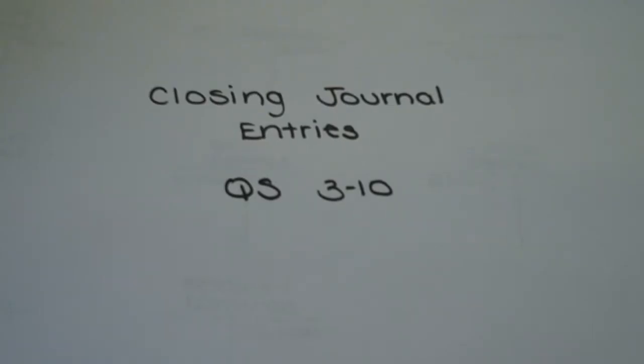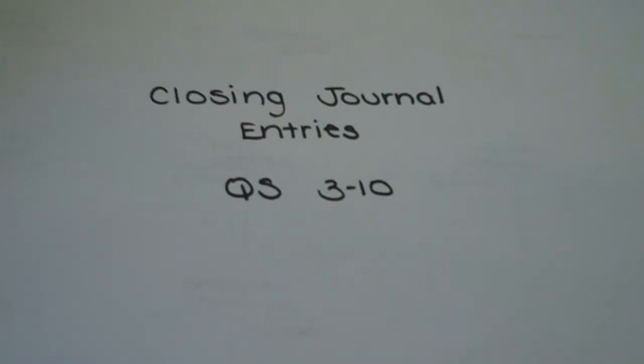We'll be looking at a problem to help illustrate the journal entries associated with the closing process. This is one of the last steps in the accounting cycle, and it's done at the end of the accounting period after the financial statements are issued. These closing entries are needed so that that year's performance can be recorded in the appropriate period.